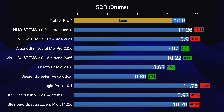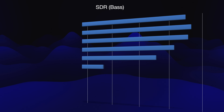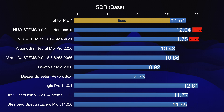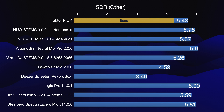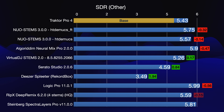For the bass stem, the situation is almost the same — Traktor beats the competition but falls behind NoStems. The other stem is the most challenging for all programs, and that's where Traktor again falls behind NoStems. In this case, Algorithm DJ Pro also comes out on top, while Virtual DJ, Serato, and Rekordbox all have worse results.